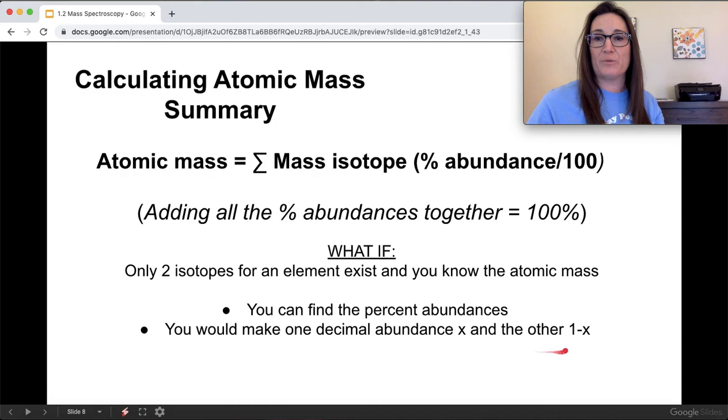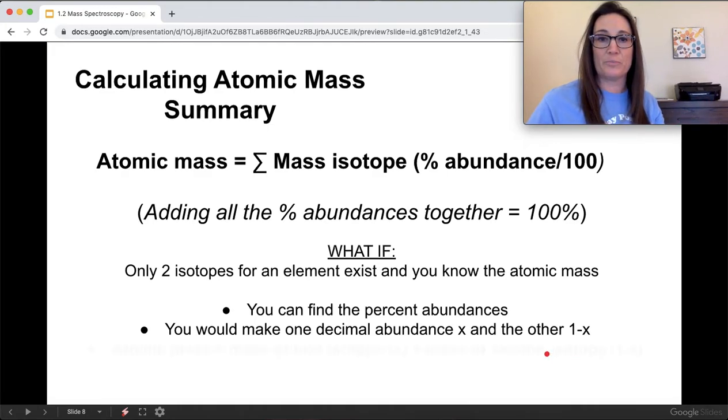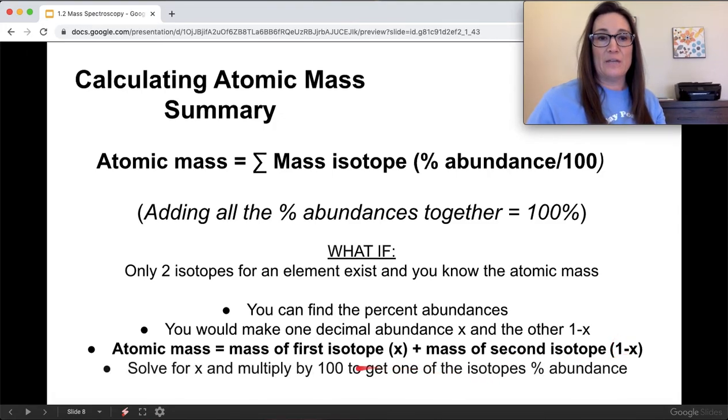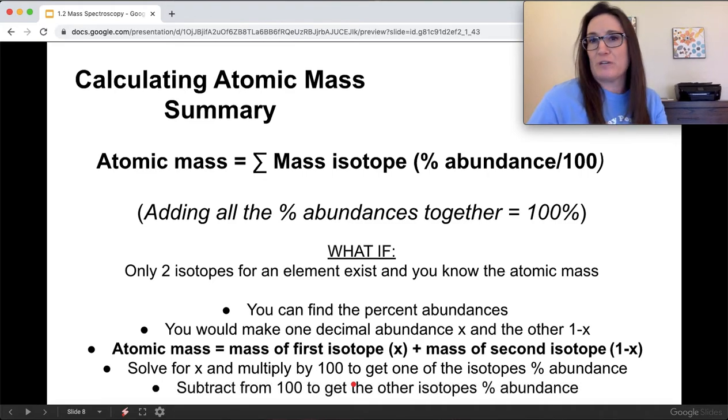So let's say one was 80%, 20%. You'd actually say x might be 0.8, and then 1 minus x would be 0.2. So that still adds up to being 80%, but as decimals 0.8 and 0.2. Next, this is the formula you'd use. You'd take that mass of that first isotope times x, mass of the second isotope times 1 minus x. Remember, these are in the decimal. And then to go backwards and get it into a percent, once you solve for x, you'd multiply it by 100. And then the last one would be just subtracting from 100 to find your other isotope. So that's one way that you can do these problems with these mass spectrographs.